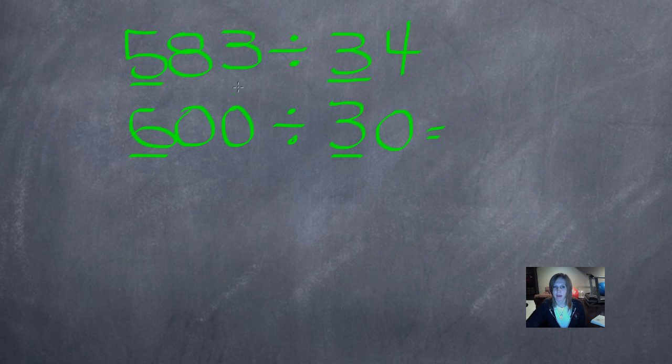And now I can use my mental math strategy. 6 divided by 3 is 2 because 2 times 3 is 6. Then this guy captures this guy, which leaves me with 1 zero left over. So my answer is 20.